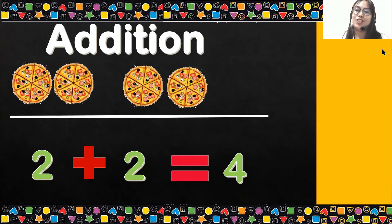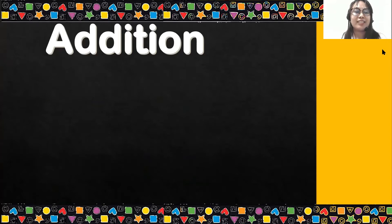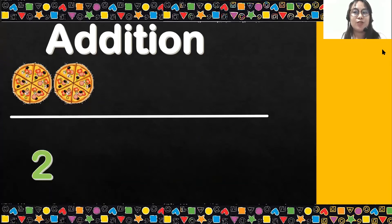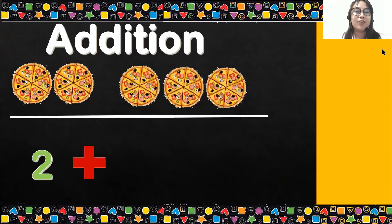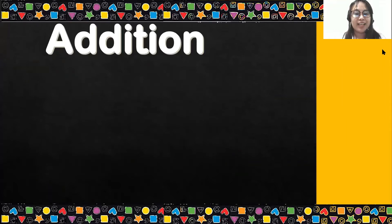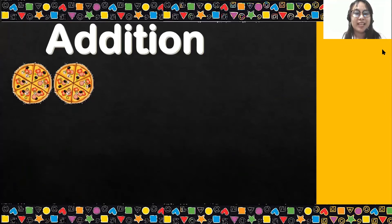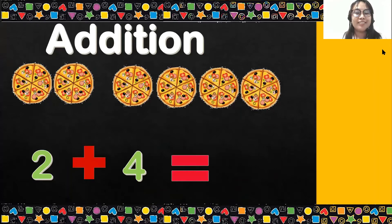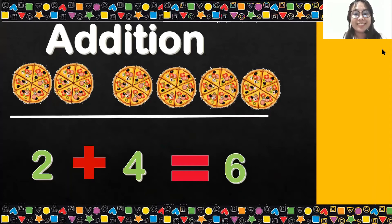That's right, 2 plus 2 equals 4. Next. Here we have 2 plus 3 equals 5. So 2 plus 3 equals 5. Okay, last one. Here we have 2 plus 4 equals 6. So 2 plus 4 equals 6.